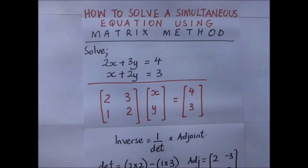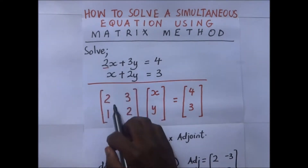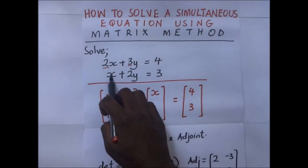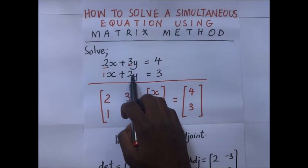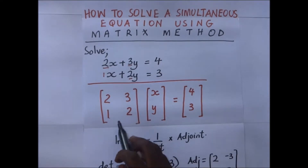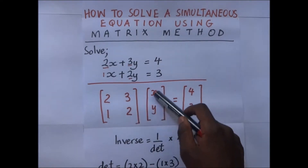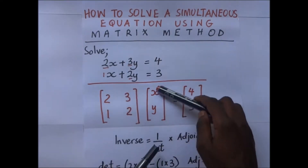To begin, we need to extract the matrix we are going to work with. We do this by extracting the coefficients of the unknowns. The coefficient of x in the first equation is 2, the coefficient of y is 3; in the second equation, the coefficient of x is 1 and the coefficient of y is 2. So our matrix is [2, 3; 1, 2].